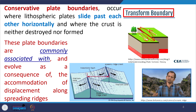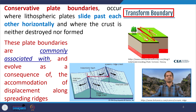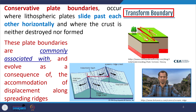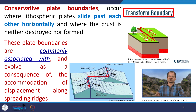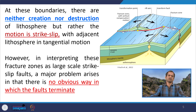Conservative plate boundaries occur where lithospheric plates slide past each other horizontally and where the crust is neither destroyed nor formed — that is the transform plate boundary. These plate boundaries are commonly associated with and evolve as a consequence of accommodating the displacement across the spreading ridge. The lithosphere is neither created nor destroyed here, and the motion is mostly of strike-slip nature.